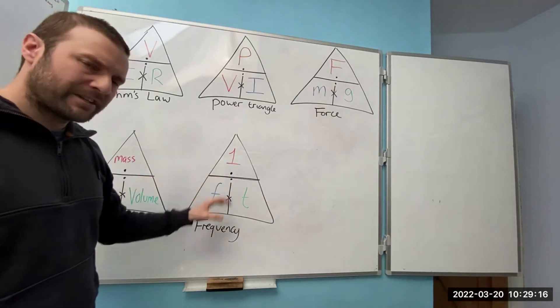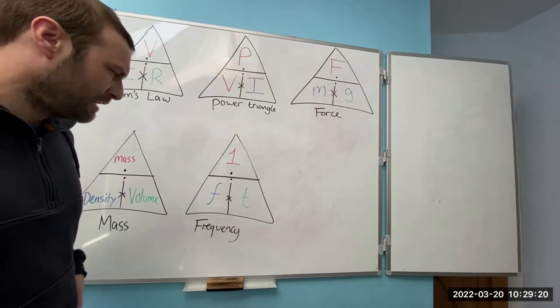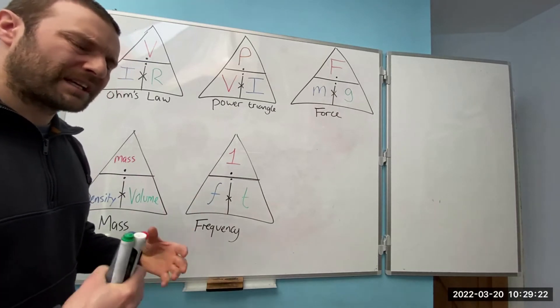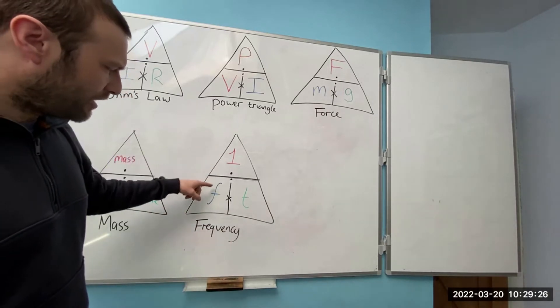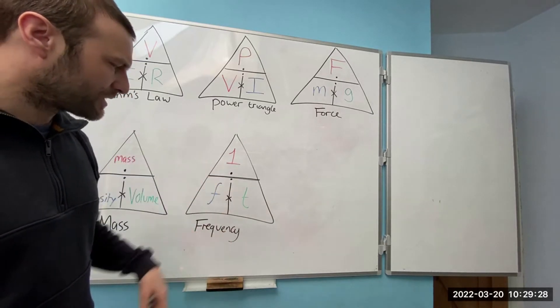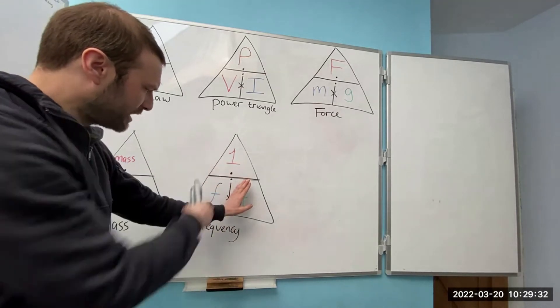And then lastly, we've got the frequency triangle. This is obviously for the 50 hertz supply in the UK, but in the science and principles exam, they get you to look at other periodic times. It would be one over frequency or one over time. If I wanted to find time, that would be one divided by the frequency.